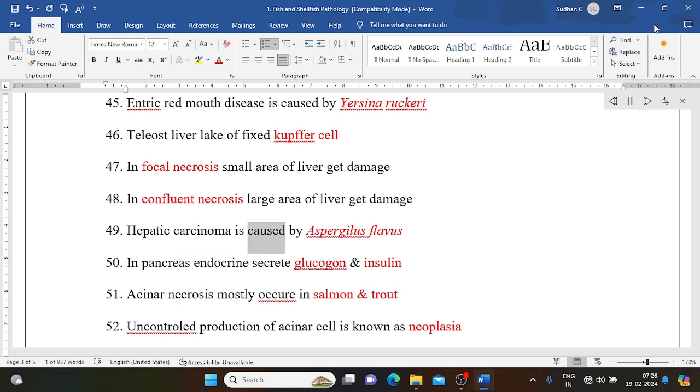Hepatic carcinoma is caused by Aspergillus flavus. In pancreas endocrine secrete glucagon and insulin. Acinar necrosis mostly occur in salmon and trout. Uncontrolled production of acinar cell is known as neoplasia.